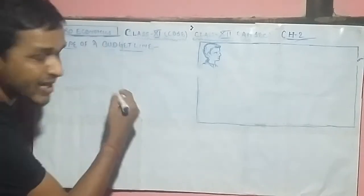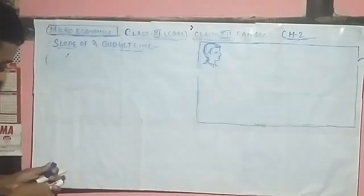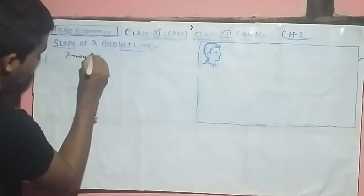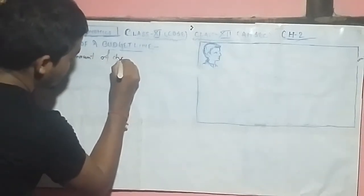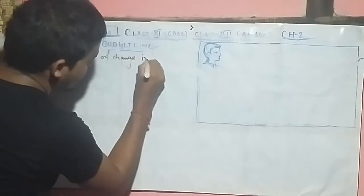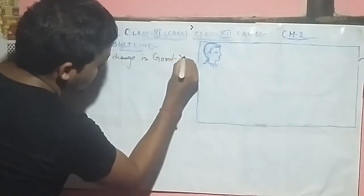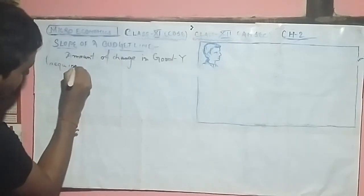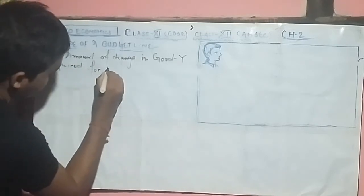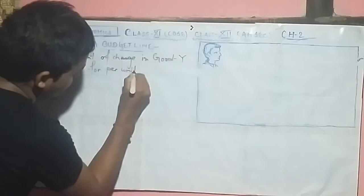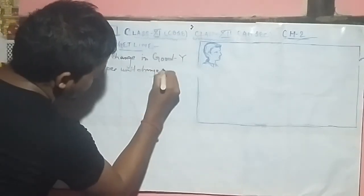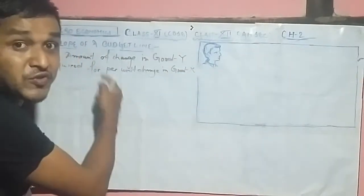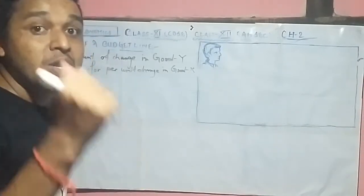What is the slope of a budget line? The slope of a budget line means the amount of change in Good Y required for per unit change in Good X.